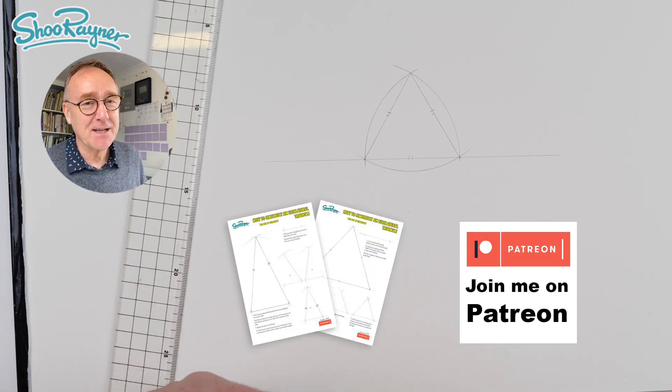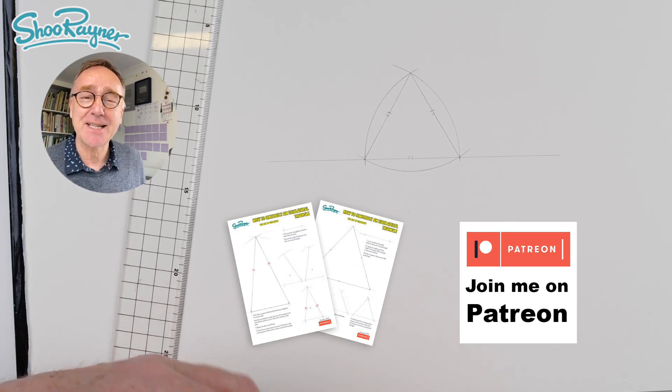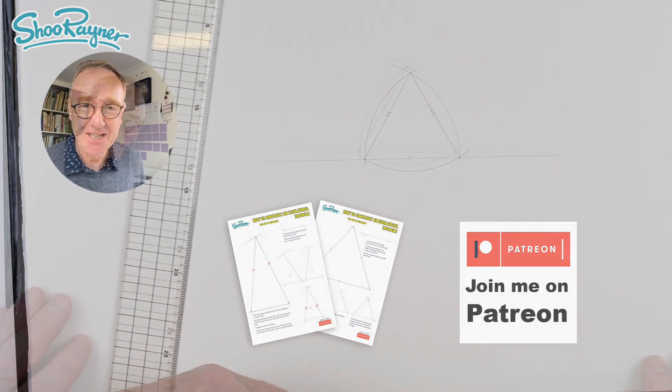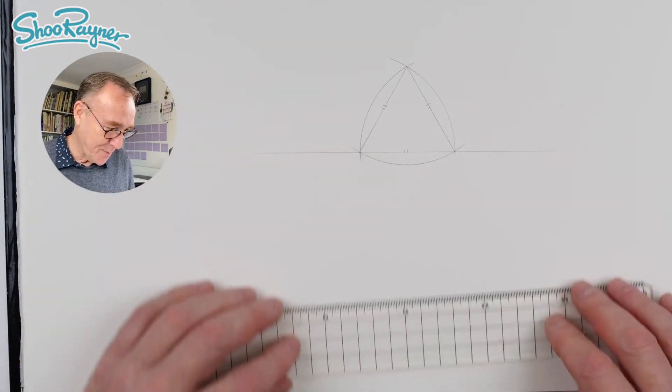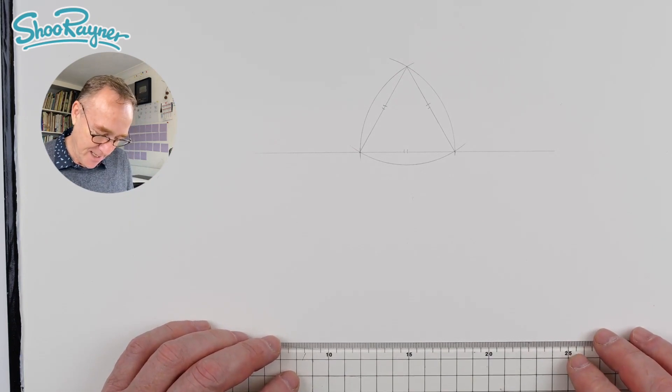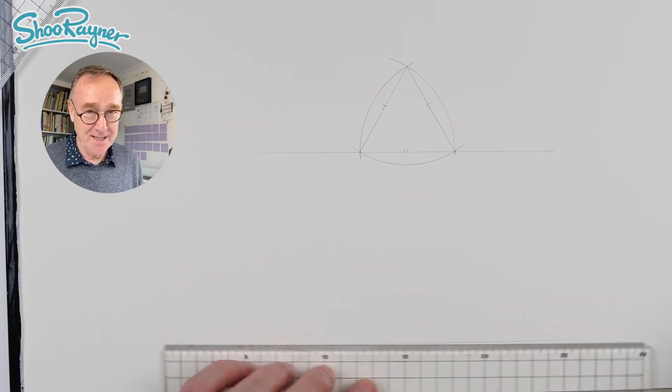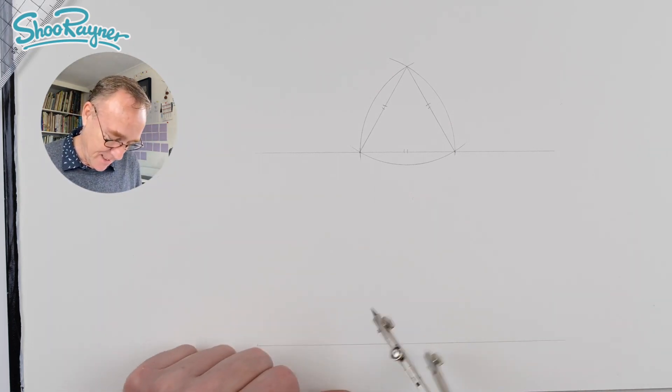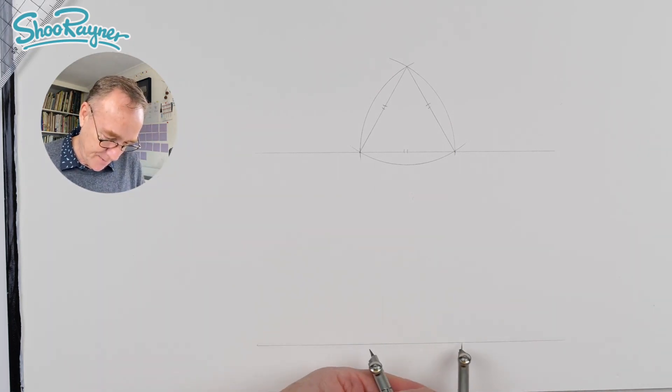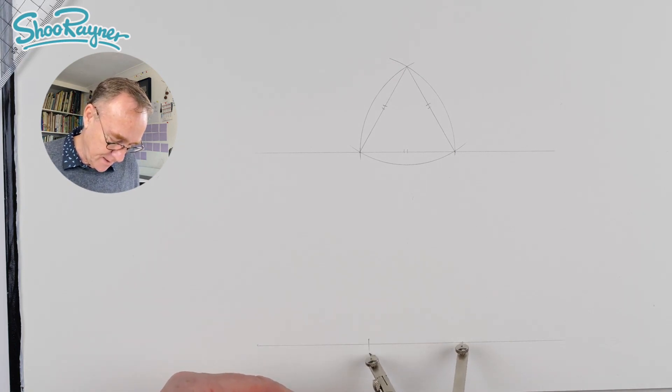If you need a bit of extra help come and join me on Patreon where you can download the PDF help sheet. Now we can use the same principle down here to create an isosceles triangle. An isosceles triangle has two lines that are the same length. So let's start again with the same kind of width.